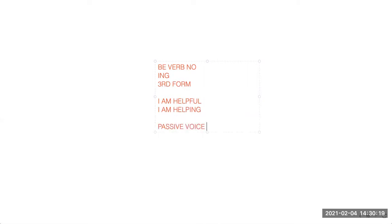The third and the biggest use is passive voice, which means the third form. Beyond that, 'be' can only be with the third form. So: one use is no verb, second is '-ing,' and third is the third form, which is used for passive voice.